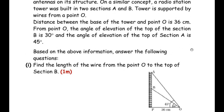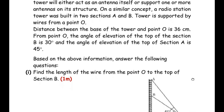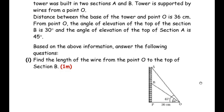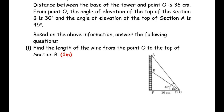Before we proceed, let us understand the question. The first paragraph explains how radio towers work. Then it states that on a similar concept, another radio station tower was built. In the diagram, a radio tower is divided into two sections — section A and section B — supported by wires OA and OB, both connected to point O. The distance between the base of the tower and point O is 36 cm. Angles of elevation for points A and B are given. In the first question, we need to find the length of wire OB.